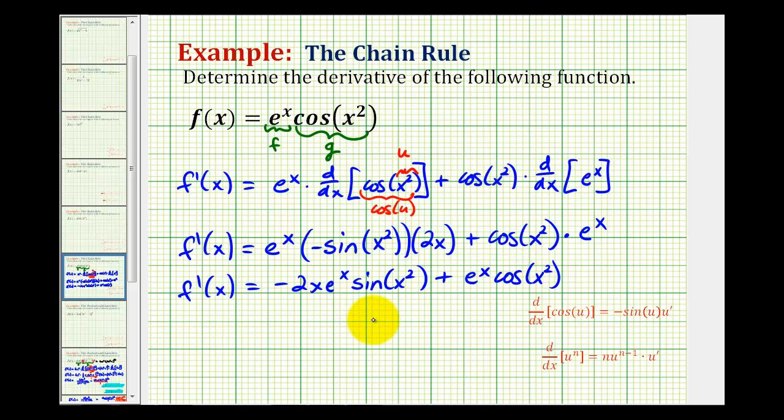So let's go ahead and finish by factoring this. The only thing these two have in common is e to the x. So let's factor out e to the x, and notice how this term would still be negative and this would be positive, so let's put the positive term first. We'd have cosine x squared, and then we'd have minus 2x sine x squared. And this would be our derivative function.